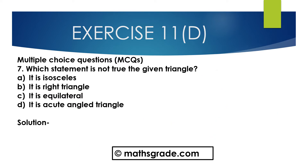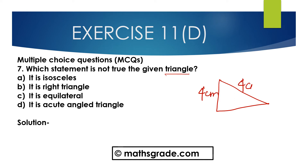Now question number 7, Multiple Choice Questions. Which statement is not true in the given triangle? First, draw the given triangle. The sides measure 4 cm, 4 cm, and 4 cm. In this triangle, all three sides are equal.